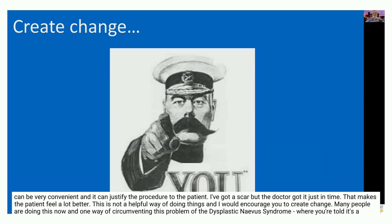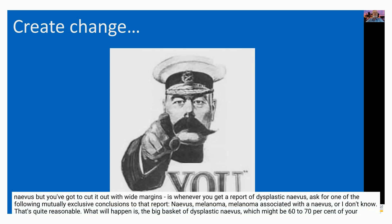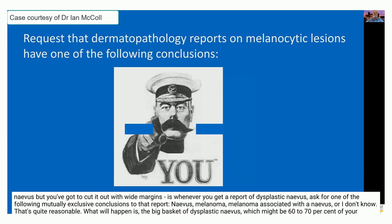But this is not a helpful way of doing things, and I would challenge you to create change. Many people are doing this now. One way of circumventing the problem of the dysplastic nevus syndrome — where you're told it's a nevus but you've got to cut it out with wide margins — is whenever you get a report of dysplastic nevus, ask for one of the following mutually exclusive conclusions to that report.